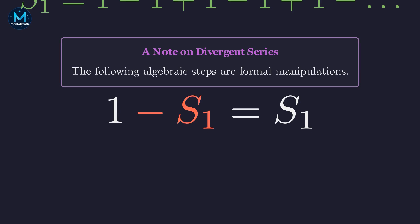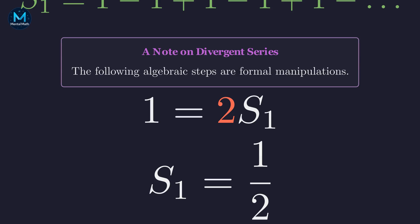To solve for S sub 1, we first add S sub 1 to both sides of the equation. This isolates the constant on the left, giving us 1 equals S sub 1 plus S sub 1. Combining the terms on the right yields 1 equals 2 times S sub 1. Finally, we divide both sides by 2 to find the value of S sub 1. Thus, the value assigned to Grandi's series is 1 half. This is our first crucial result.